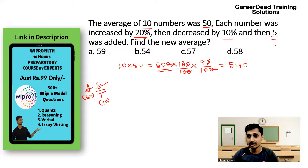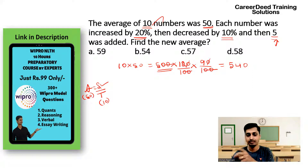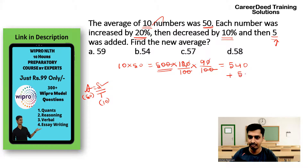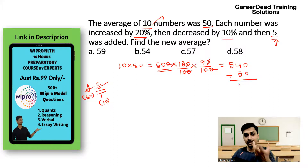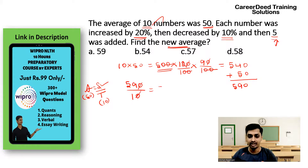Now you have one more step: 5 was added to each number. So 5 is added with all 10 numbers: 5×10 = 50. Add 50 to 540: you get 590. So 590 is the new sum. Now find the new average: 590 divided by 10 = 59. So 59 is your new average.